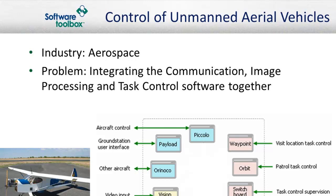A single user can control the fleet of aircraft and command it to carry out complex missions such as patrolling the border, following a highway, or visiting a specified location. Each airplane carries a video camera and an onboard computer and communicates with the ground station and other aircraft in formation.